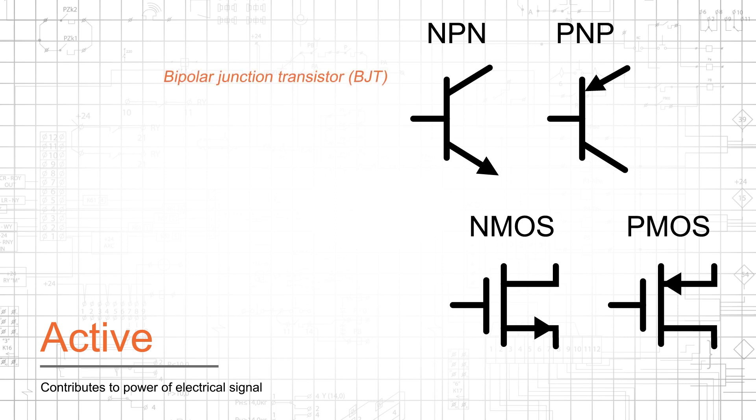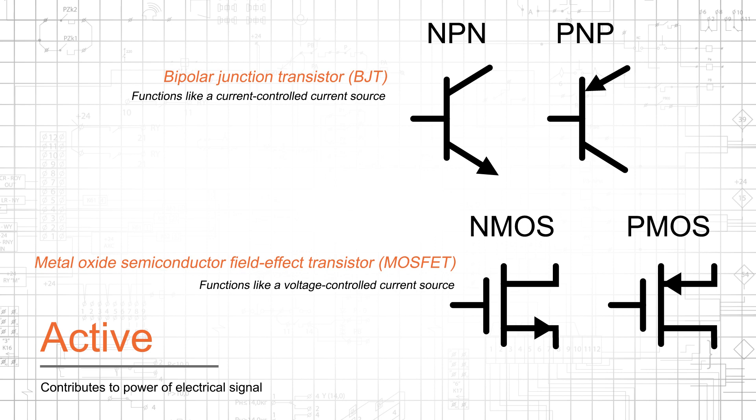A bipolar junction transistor, or BJT, functions like a current-controlled current source, and a metal oxide semiconductor field effect transistor, or MOSFET, functions like a voltage-controlled current source. Both types of transistors can be used as a switch or as an amplifier.